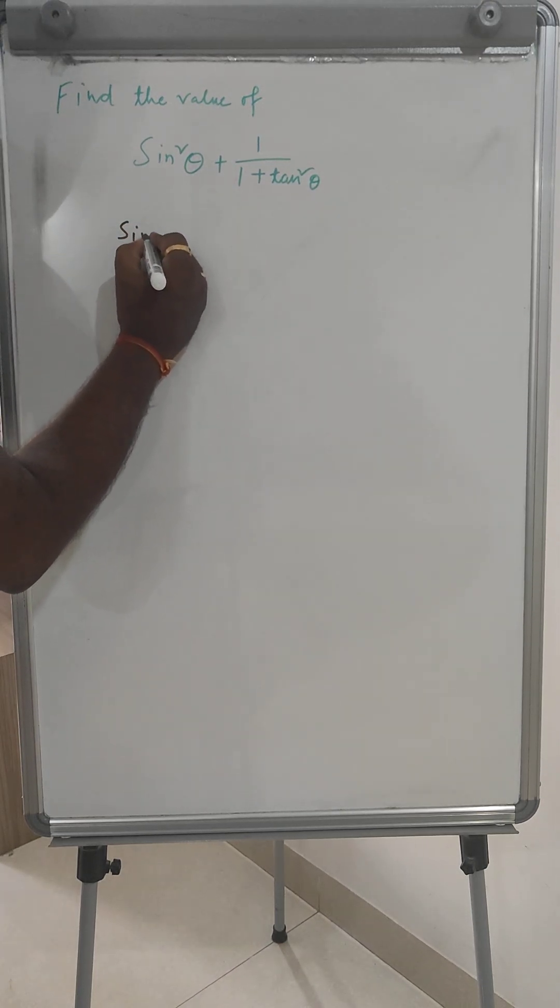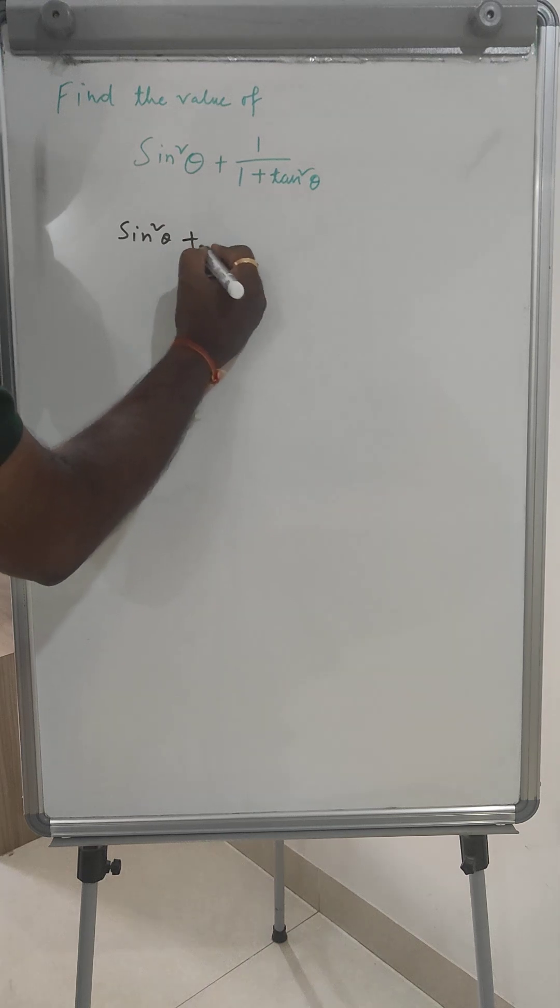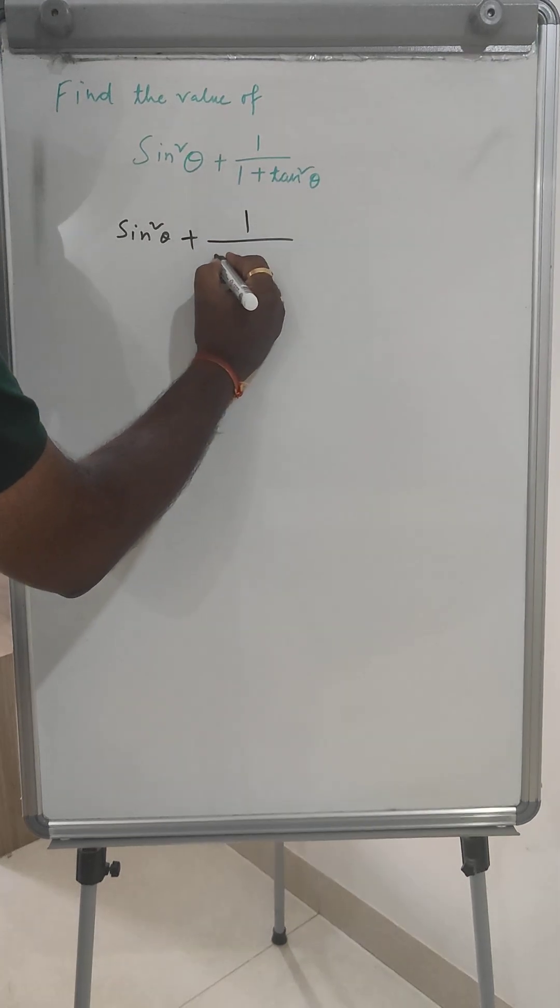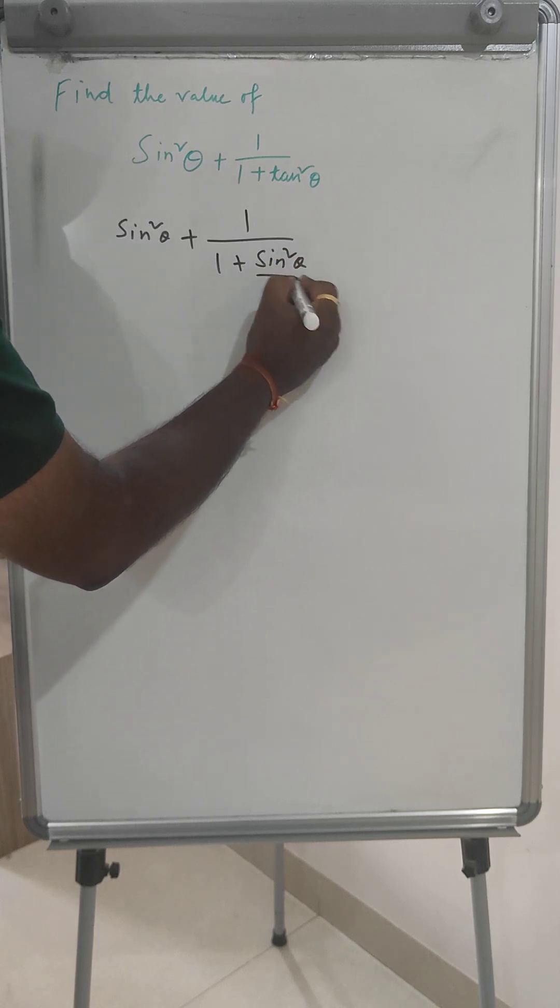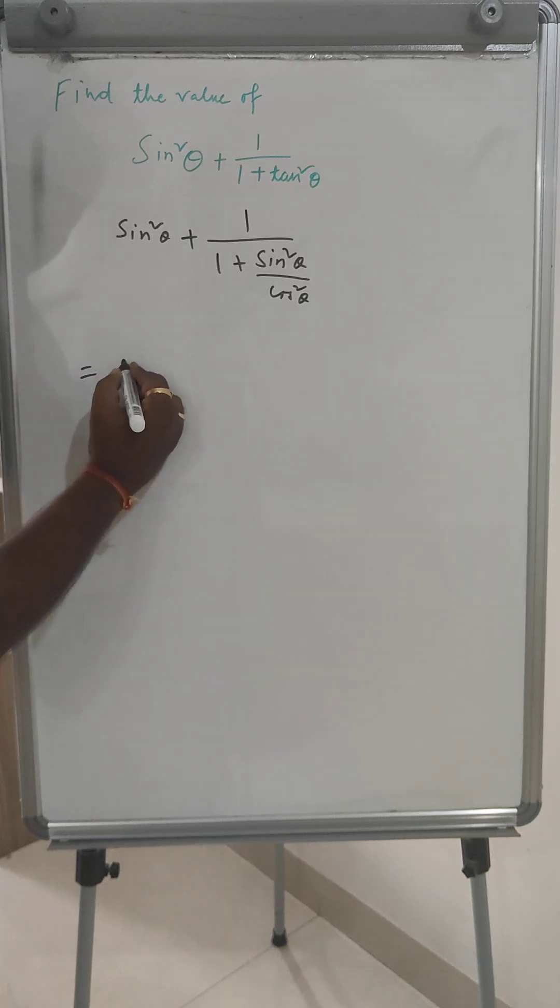So this is sin²θ + (1 + sin²θ)/cos²θ. What will be happening now?